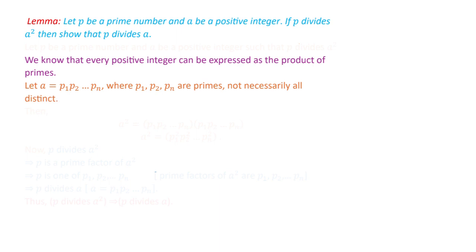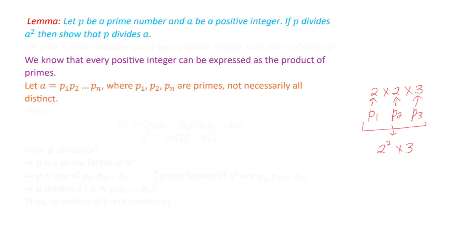What we mean by 'not necessarily all distinct' is that, for example, a number like 2 times 2 times 3 — here p1 is 2, p2 is 2, p3 is 3 — we are considering the prime factorization in this repeated form. So the positive integer a has prime factorization p1 times p2 up to pn. From this, we can calculate a squared, which equals p1 squared times p2 squared, up to pn squared.